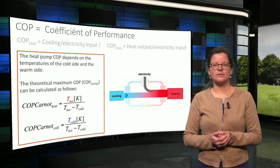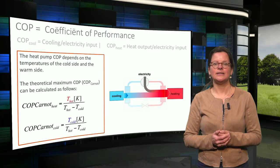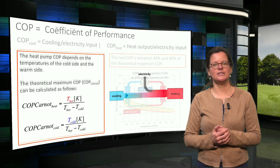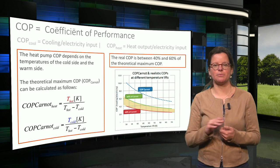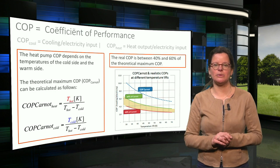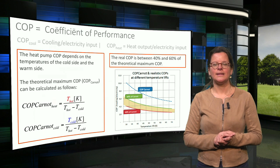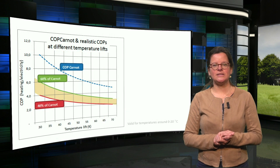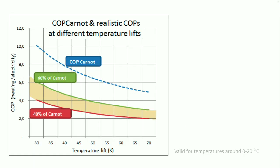This theoretical maximum COP cannot be achieved in reality. In reality, COPs between 40% and 60% of the maximum value are usually achievable. As can be seen in this figure, this results in commonly achievable COPs between 2 and 6, depending on the temperature lift required between the cold side and the warm side.